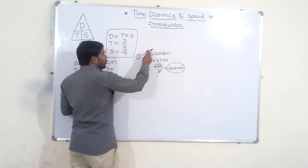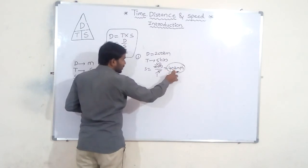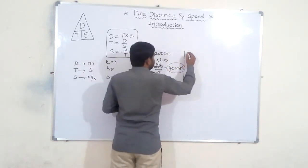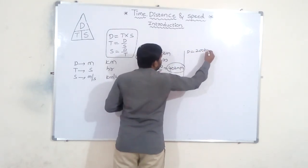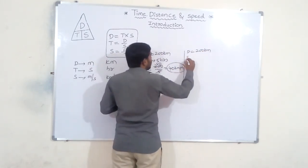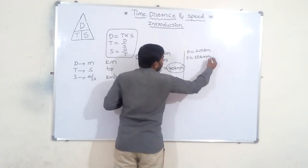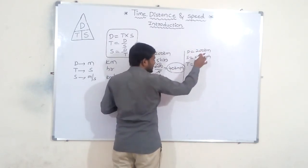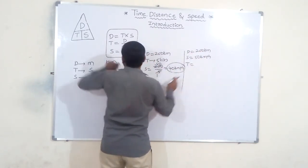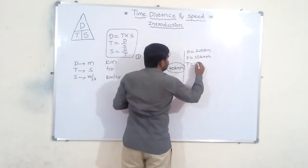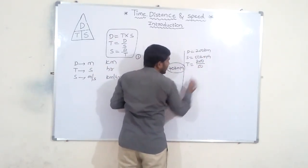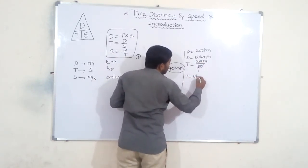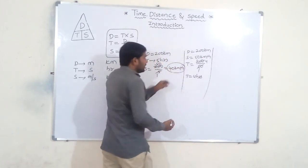Second problem: distance is 200 kilometers, speed is 50 kilometers per hour — find the time taken. Time equals distance by speed, so 200 by 50 equals 4 hours. It takes 4 hours to cover 200 kilometers at 50 km/h.